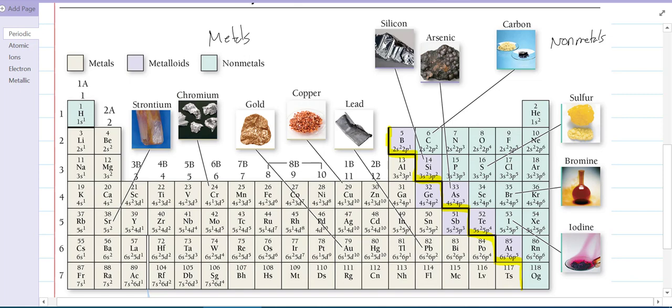They all look nice and silver, chromium, gold, copper, there's lead, silicon's kind of nice, arsenic, carbon is right there, that's sulfur, bromine's a liquid, brown liquid, iodine, it's like a purple solid but it vaporizes, it sublimes pretty easily. Alright, so let's dive into these.